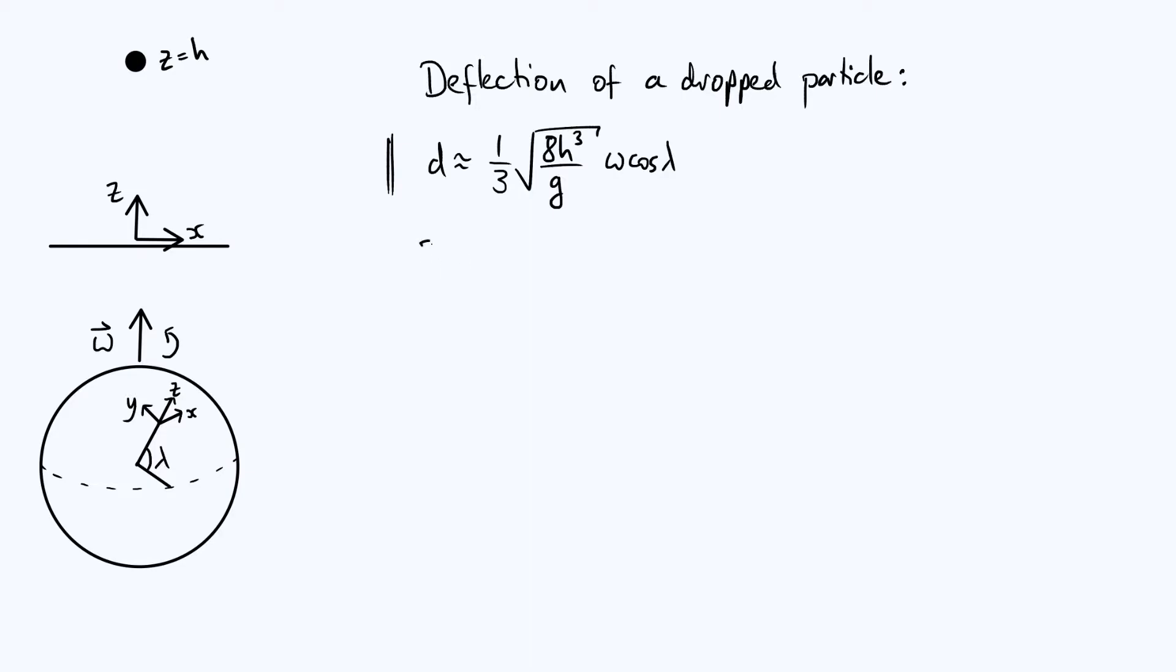And so what we can do is say 3d over omega cos lambda, if we have that and then we square that whole thing, that is going to be 8h cubed over g.